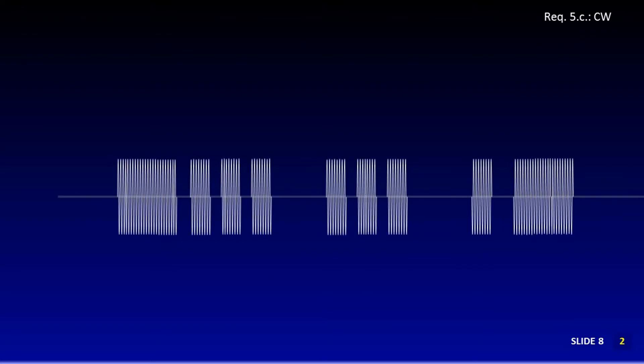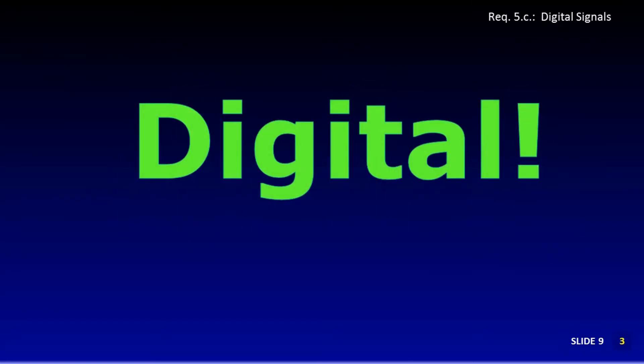Let's look at one more. Take a look at the string of CW dit and da's. What might the operator be sending?